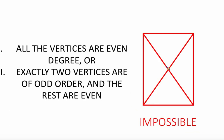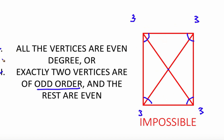Now let's look at the second example — why is this not traversable? Let's check if any of these two conditions are met. Looking at the vertices: this one has three lines, so it's odd; this is also an odd vertex; this is also an odd vertex; and this is also an odd order vertex. Because there are at least four odd order vertices, that already violates our second condition. And since there is at least one odd order vertex, the first condition is also violated. Because both conditions are violated, we conclude that this graph is not traversable.